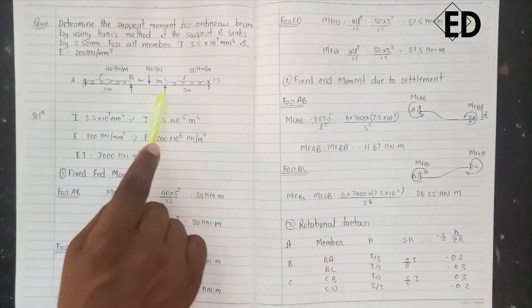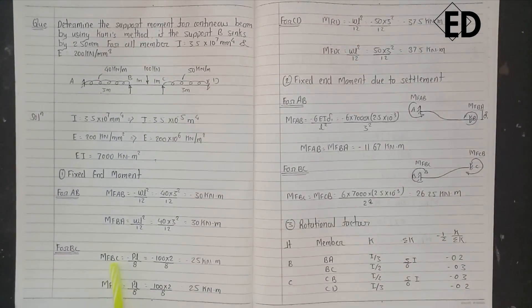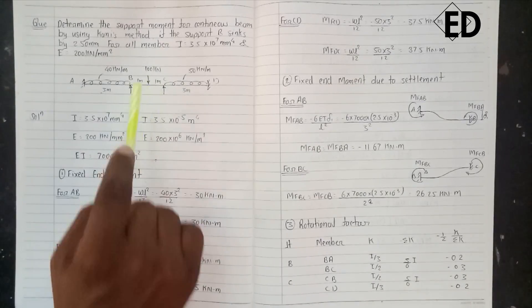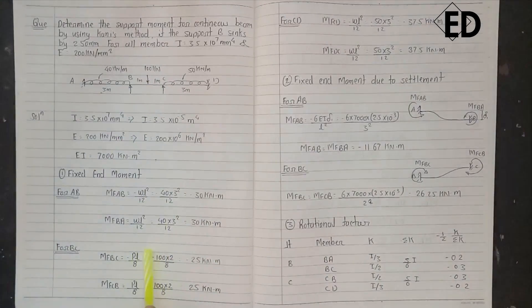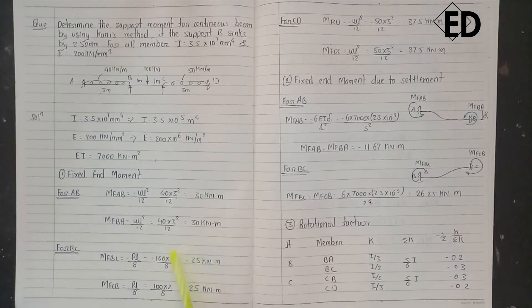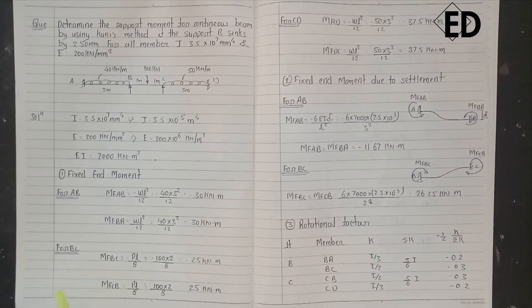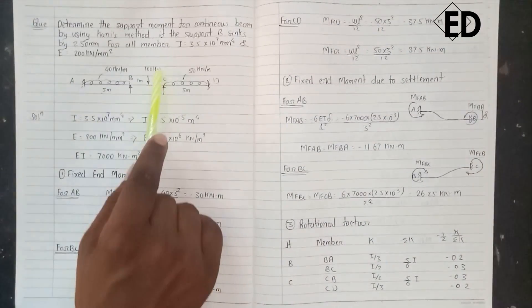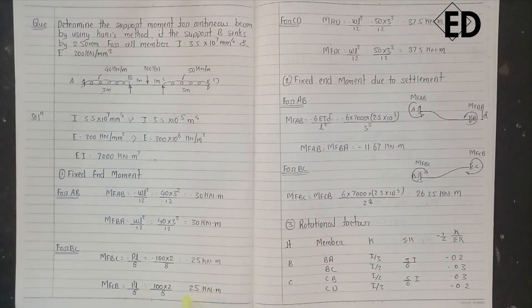Similarly for span BC, the fixed end moment from B to C — as the point load is acting at the center — is PL/8, which is negative because the moment acting here is in the anti-clockwise direction. So while putting in the values we get minus 25 kN·m. Also, the fixed end moment from C to B is the same because the point load is acting at the center, so directly we get 25 kN·m.